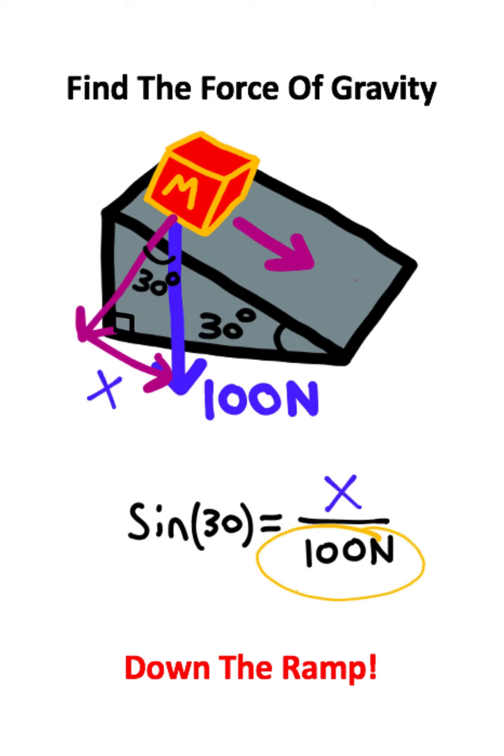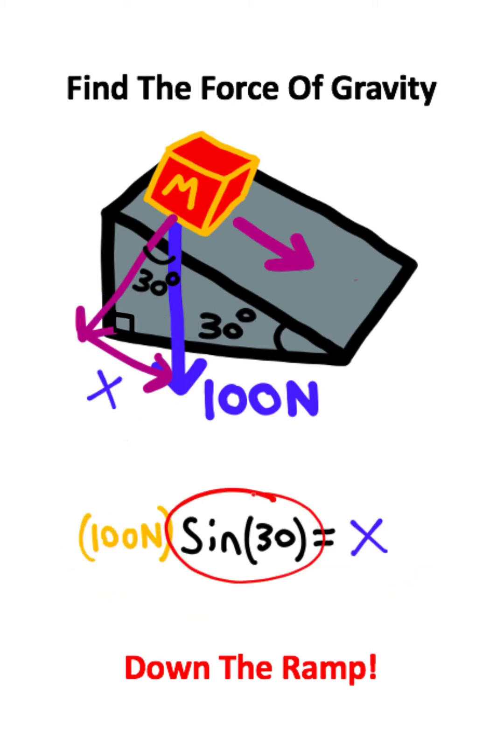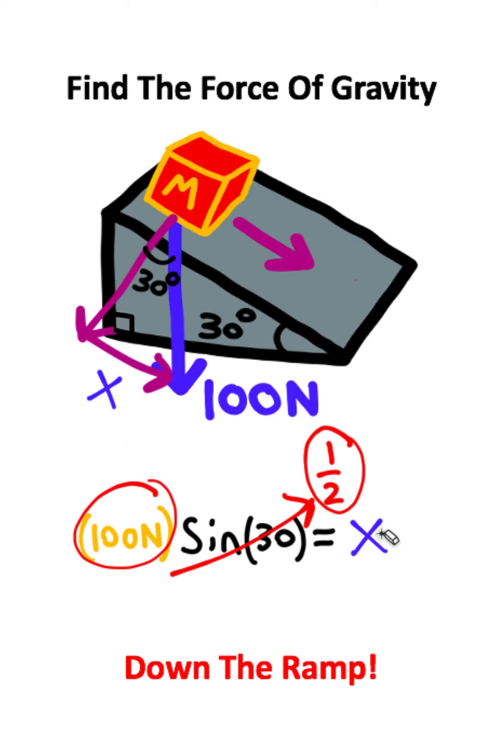So I can take this 100 Newtons and move it over to the left, and the sine of 30 degrees is simply equal to one half. So if I take one half of 100, I'm going to get that the opposite side of this triangle is equal to 50 Newtons.